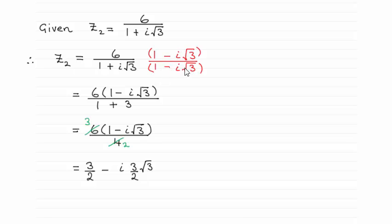Multiplying top and bottom by the same value is like multiplying by 1, so it changes the appearance but keeps the same value. We have 6(1 - i√3) on the top.